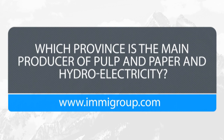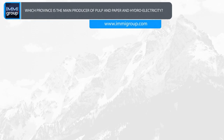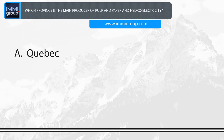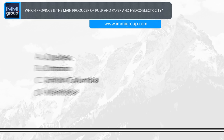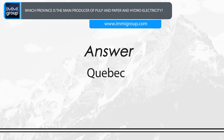Which province is the main producer of pulp and paper and hydroelectricity? A. Quebec. B. Ontario. C. British Columbia. D. Manitoba. Answer: Quebec.